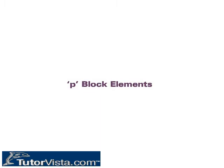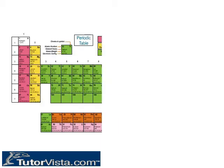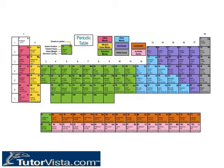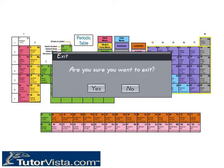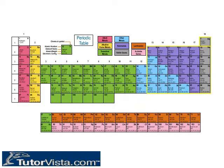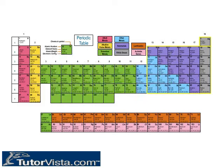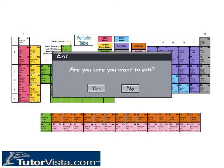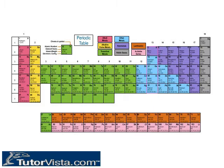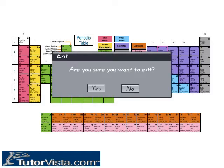P-Block Elements are located in groups 13 to 18 in the modern periodic table. They are all non-metals with characteristic physical features. Two important groups are group 13 elements, the boron family, and group 14 elements, the carbon family.